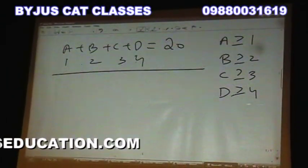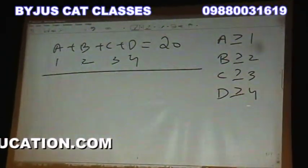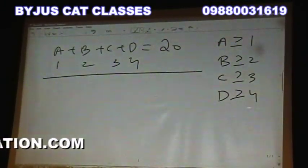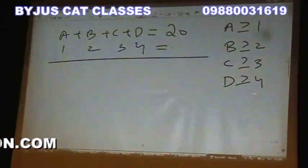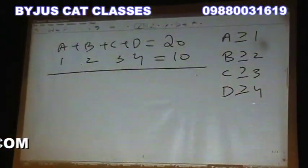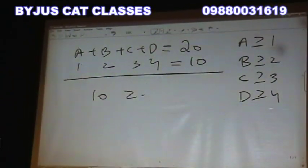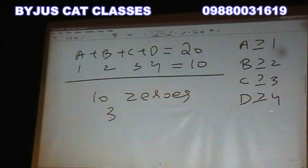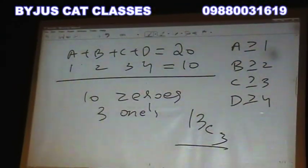Give 1 to A, 2 to B, 3 to C, and 4 to D. That means 10 are taken out. It's only a matter of the remaining. How many zeros? 10 zeros. And how many ones? 10 zeros and 3 ones — so the answer is 13C3.